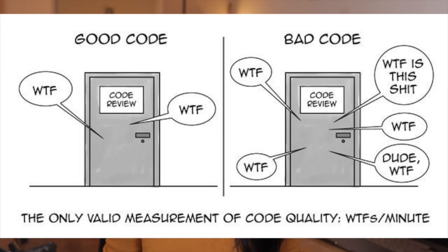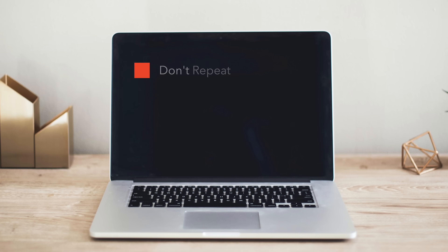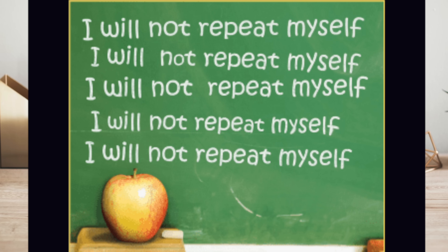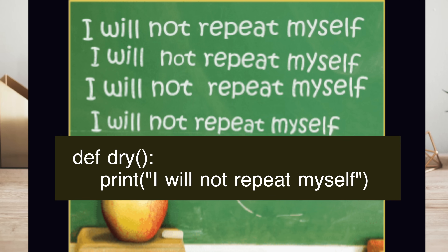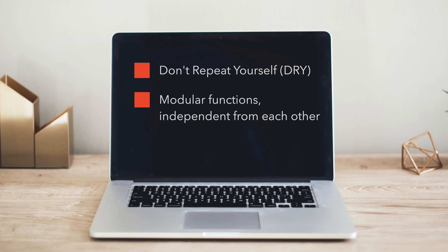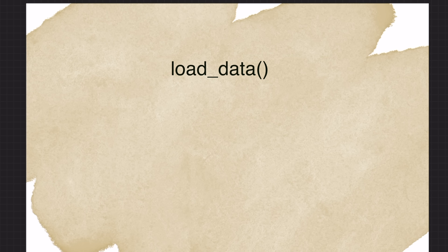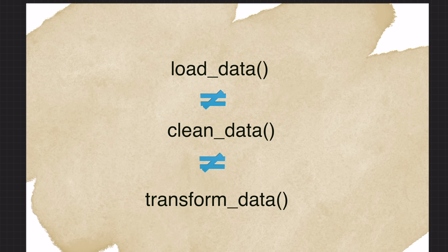Good coding practices also include following certain coding principles. For example, not repeating yourself or not writing redundant code. Instead, it's better to create a specialized function and reuse it in your code. Functions should be modular, independent from each other, and should solve a specific problem. For instance, the code that loads a dataset shouldn't do anything else like data cleaning or data transformation, and shouldn't depend on any other module to work.